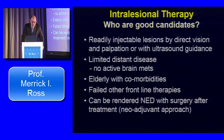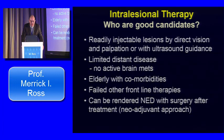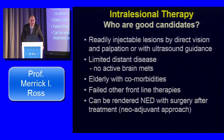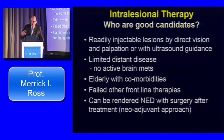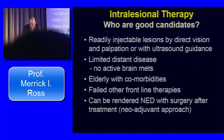For intralesional therapy, good candidates include patients with readily injectable lesions by direct vision, palpation, or ultrasound guidance, limited distant disease, and no active brain metastases. Elderly patients with significant comorbidities who wouldn't tolerate other therapies would tolerate this very well. Patients who have failed other frontline therapies are candidates, as is consideration in a neoadjuvant setting — patients can be rendered NED with surgery after treatment. These agents cannot be used in the adjuvant setting; they must be given in the neoadjuvant setting because you must inject the tumor to get an immune response.